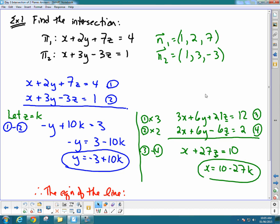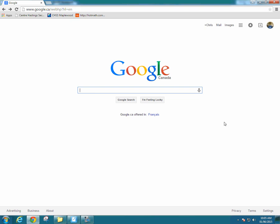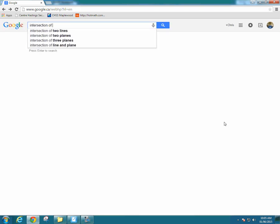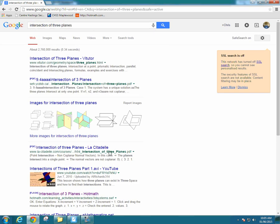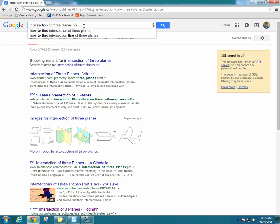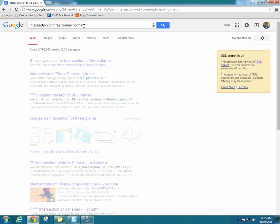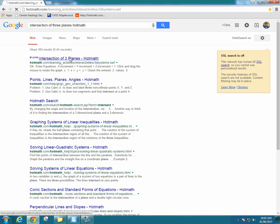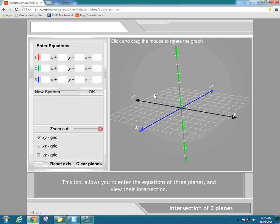The website is called Hot Math, which is kind of funny. The way I discovered it was I looked up the intersection of three planes and found Hot Math. If you want to do your own, add Hot Math to the end of your Google search and you'll come right to this intersection of three planes tool.